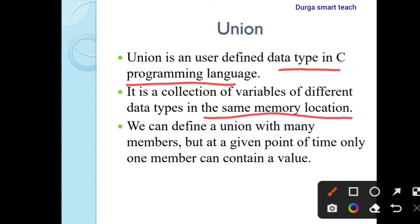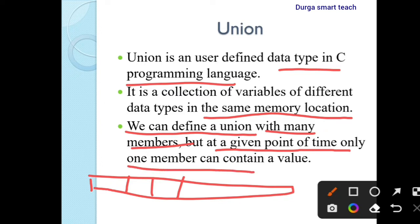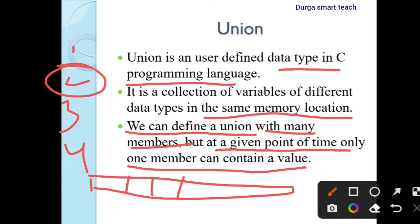In the same memory location — but structure allocates the memory continuously, whereas union allocates memory differently. We can define a union with many members, but at a given point of time, only one member can contain a value. So that is the difference between structure and union.